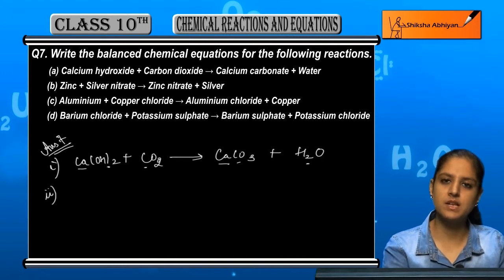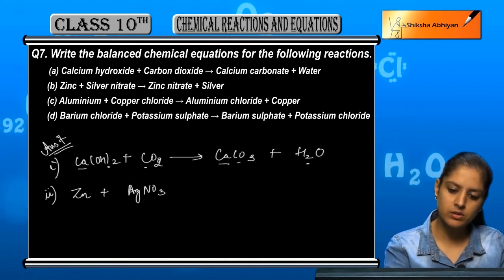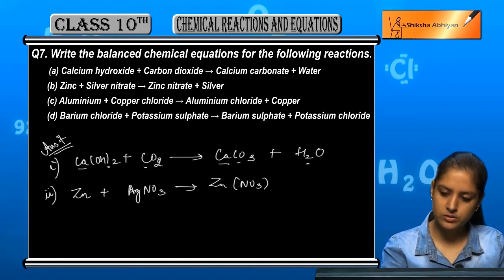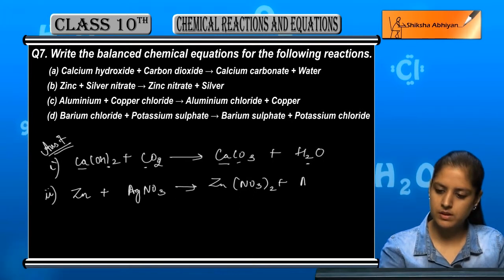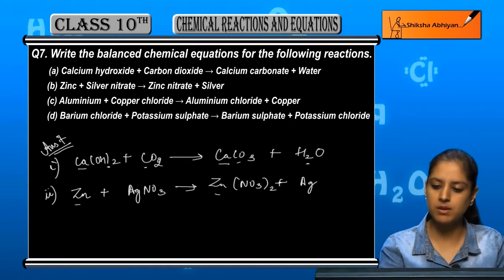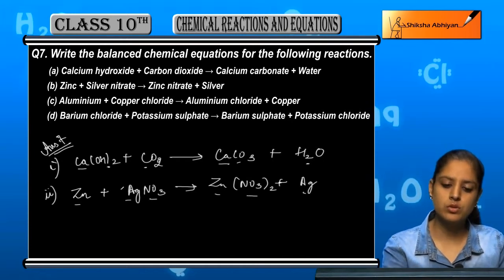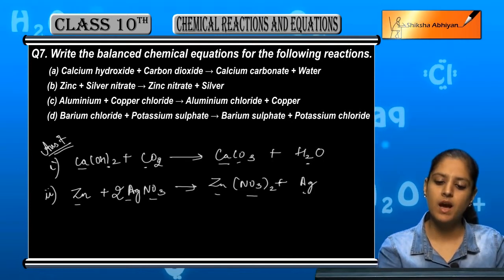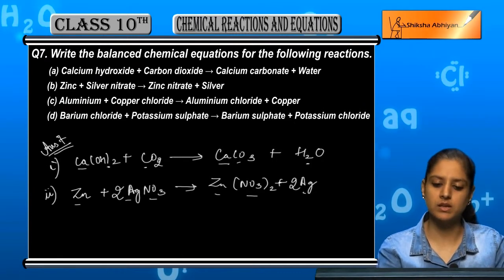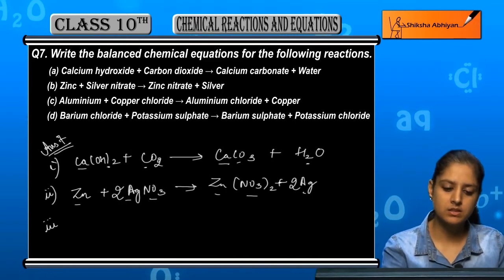Second reaction: zinc Zn plus silver nitrate AgNO₃ gives zinc nitrate Zn(NO₃)₂ plus silver Ag. Balancing: Zn is the same on each side. Ag is the same. NO₃ — we have two on the product side, so we multiply AgNO₃ by 2. The balanced form is: Zn + 2AgNO₃ → Zn(NO₃)₂ + 2Ag.